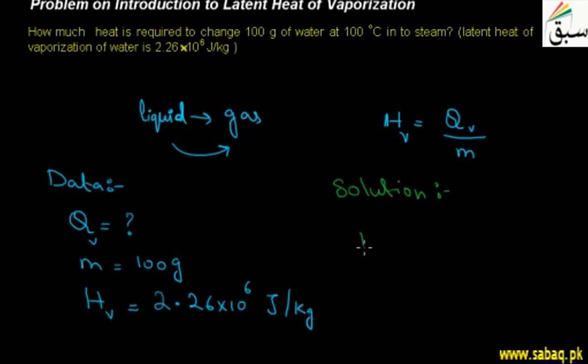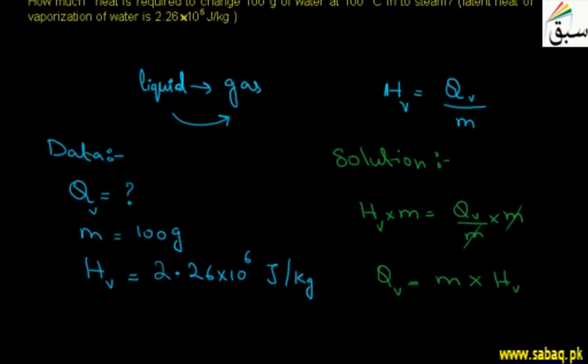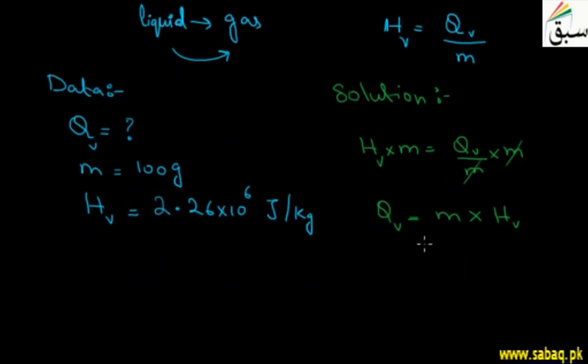So what will I do? On both sides, I multiply by m. This is a mathematical operation performed on both sides of the equation. After canceling m, QV = m × HV. This means you multiply the mass with HV to get the amount of heat required.